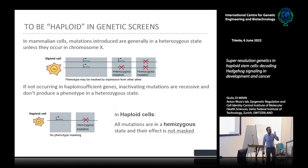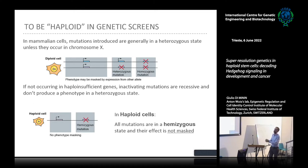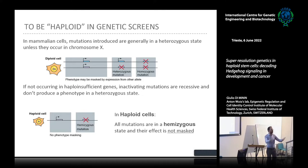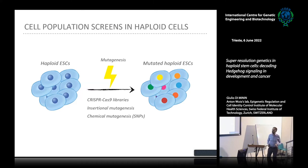If you introduce a mutation in the mammalian genome, this mutation will, in most cases, be in a heterozygous state. If the mutation is a loss-of-function mutation, this means it will always be phenotypically masked by the other allele. In haploid cells, instead, we totally bypass this problem, and any mutation we introduce is directly phenotypically exposed. This allows us to perform genetic screening with a resolution not comparable to any other mammalian cellular system.